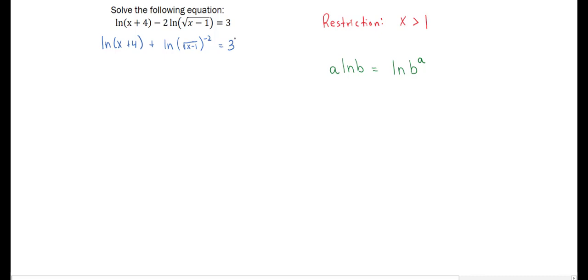We then want to simplify that second term a little bit more. Remembering that square root can be rewritten as a power of 1 half, and when we apply our exponent laws we get that term inside is x minus 1 to the power of minus 1, or rewriting that as 1 over x minus 1.